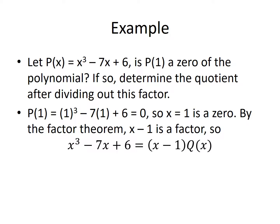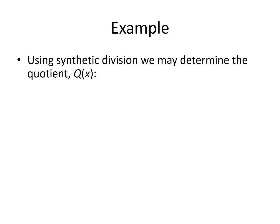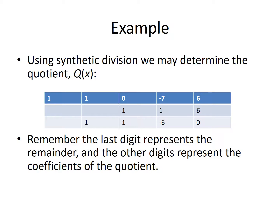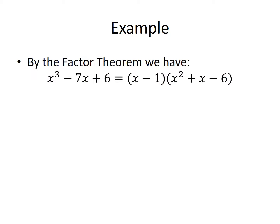So we may write x cubed minus 7x plus 6 as equal to x minus 1 times some other polynomial q of x. Using synthetic division, we may determine the quotient q of x. We set up our synthetic division tableau, perform the synthetic division, and remember the last digit represents the remainder and the other digits represent the coefficients of the quotient. So the quotient q of x would be x squared plus x minus 6.